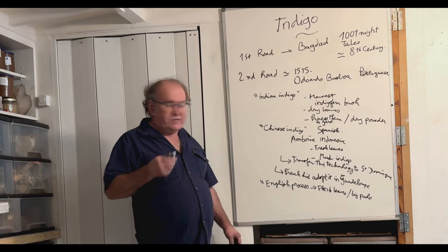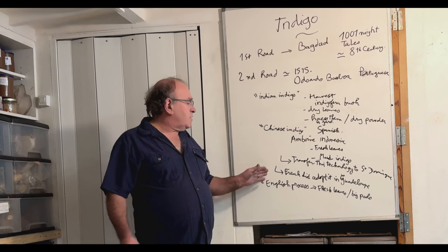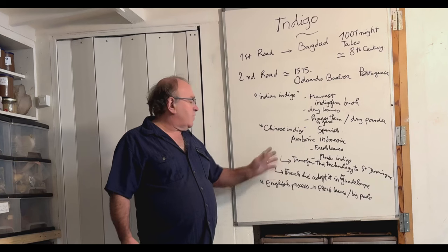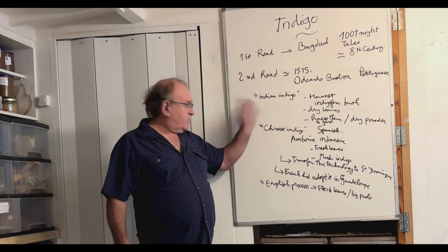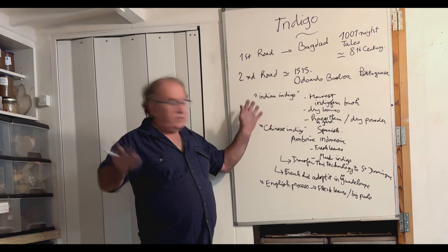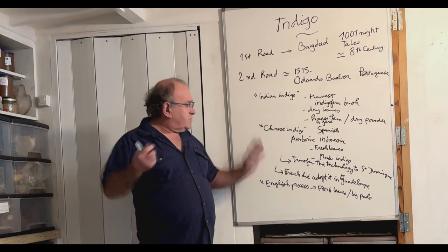So the Chinese were using their four main plants by this process, and this process became the historical process. So at the end, I would say that the Spanish did not adopt the Indian process, nor the other Europeans, Dutch and others. So that's the Chinese process which became the future of industrial development.